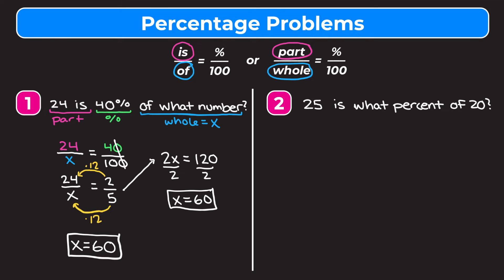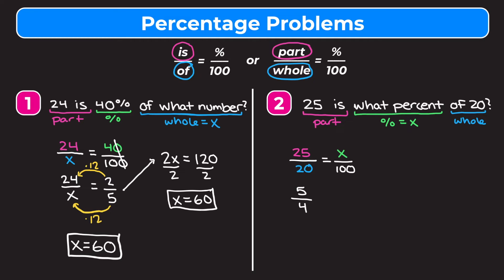Let's look at example 2, which says: 25 is what percent of 20? So 25 is next to 'is,' so that's our part. This time we have 'what percent,' so that is what we're solving for — the percent equals x. And 'of 20' is our whole, so 20 is our whole. Plugging into our proportion: 25 on the top left, 20 underneath it. We set this equal to x over 100. Now simplify the left side by dividing top and bottom by 5: 25 divided by 5 is 5, 20 divided by 5 is 4. So we get 5 fourths equals x over 100.